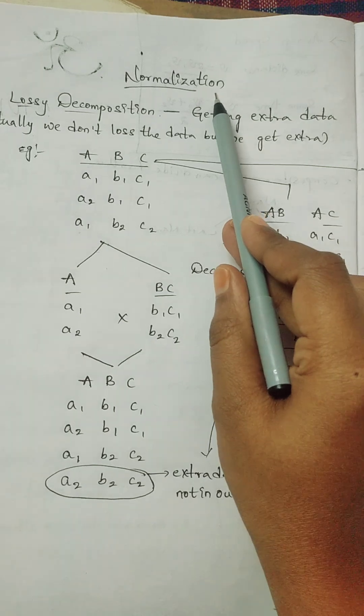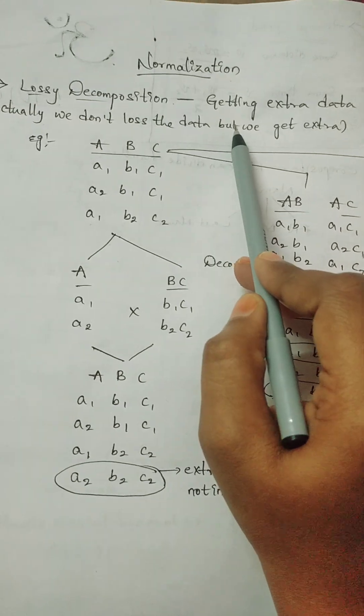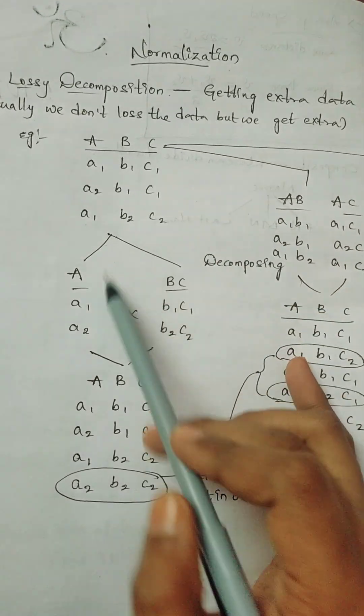Normalization means removing the redundancy of the data. Suppose we have a larger data set. We are dividing the data set into smaller parts like this.